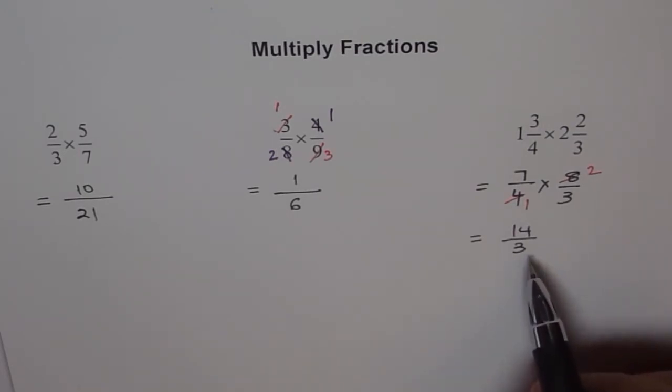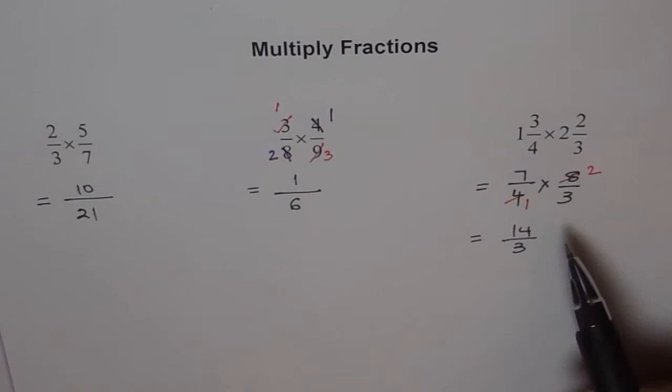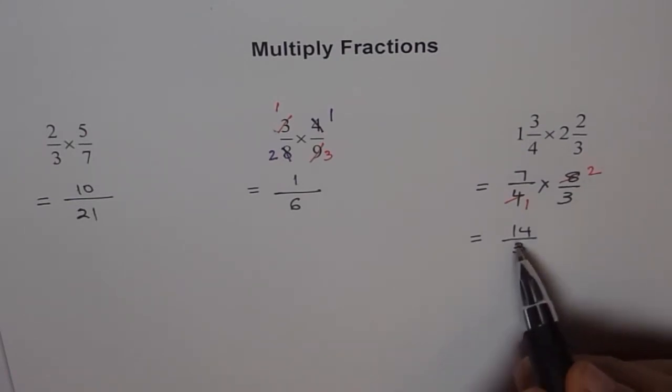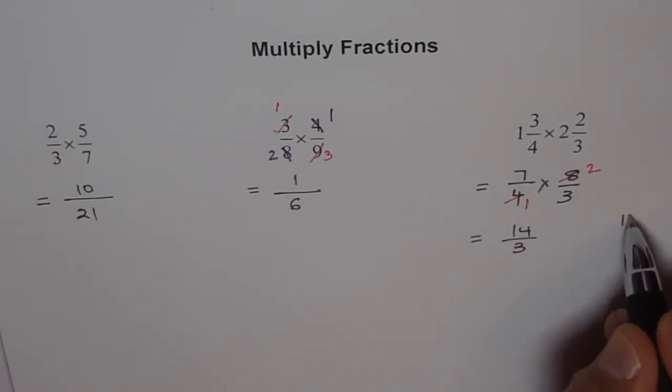But at this stage, you can write answer as a mixed fraction. So divide 14 by 3. So how do you do it? You have 14. And then you divide 14 by 3. 3 goes 4 times. 4 times 3 is 12. And 2 is a remainder.